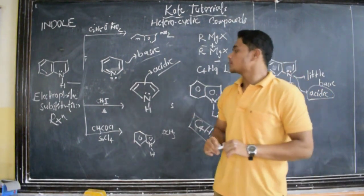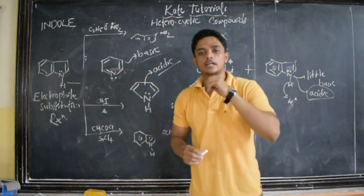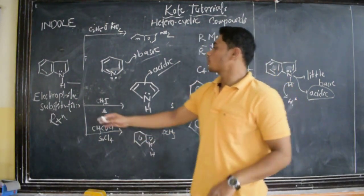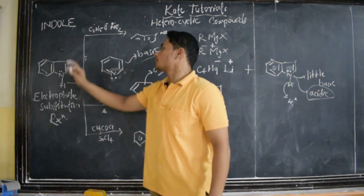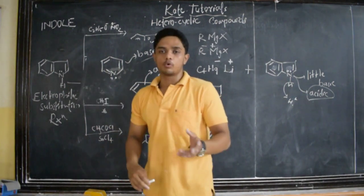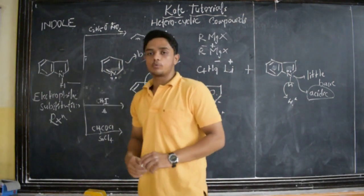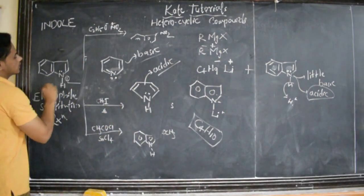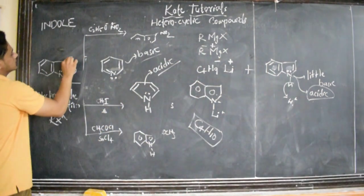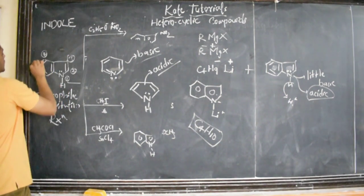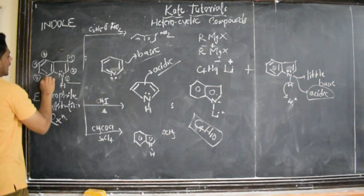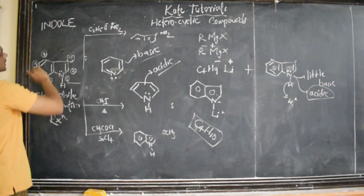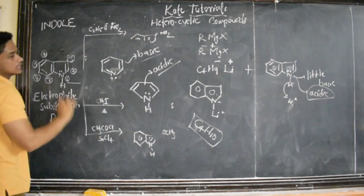It is about electrophilic substitution reaction. One question I left: why do electrophiles attack only this position, third position? Why not any other position, second or any other position? And the numbering of position is like this. One should be given to nitrogen, followed by 2, 3, 4, 5, 6, and 7. It should be anti-clockwise and we should not number these two positions.